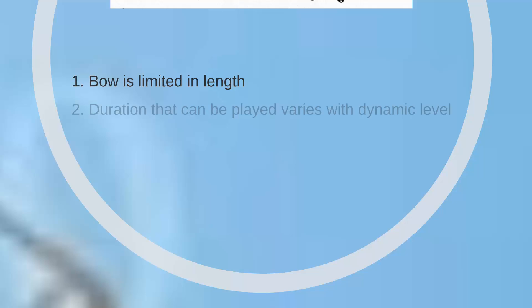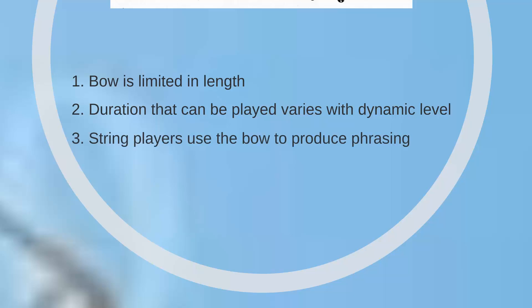The bow has a similar function to the air in wind instruments, and there are many parallels. First, the bow is limited in length, just as the supply of air is limited for wind players. Second, the duration that can be played on a single bow varies with the dynamic level — much more bow is required for loud playing than for soft. Third, string players use the bow to produce phrasing and articulation, just as wind players use their breath.